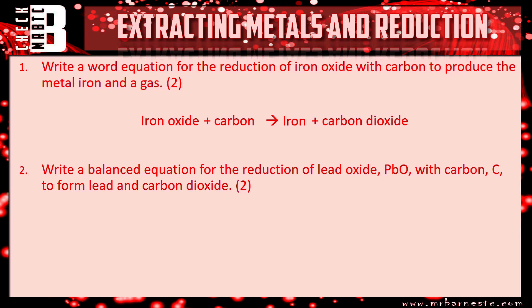Question two: write a balanced equation for the reduction of lead oxide, PbO, with carbon, C. Lead is simply Pb and carbon dioxide is CO₂. To balance it, you'll notice there are two oxygens on the right-hand side but only one on the left, so put a two in front of PbO, giving two Pb's and two O's. On the right you only have one lead, so you need another — and the equation is balanced. One mark for the equation, one mark for the balancing.